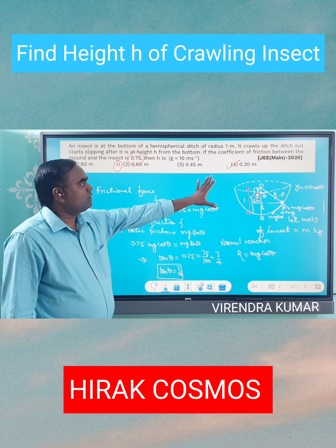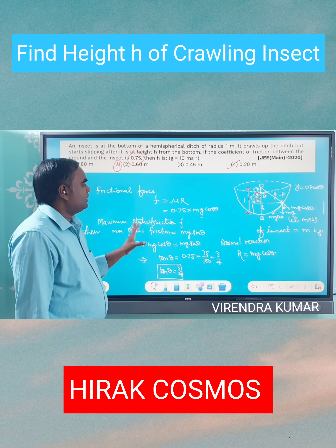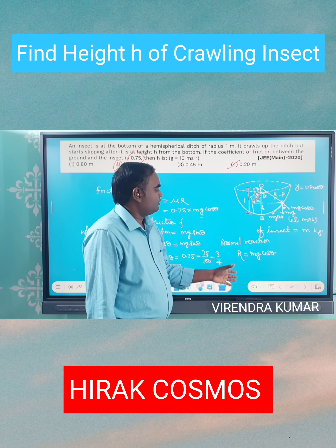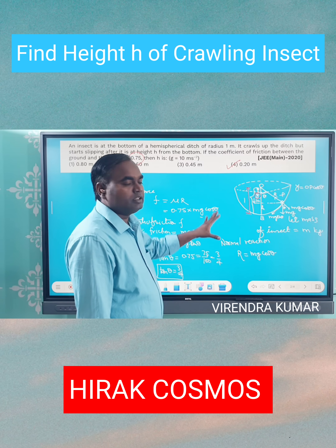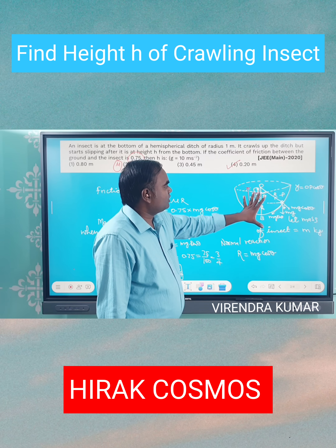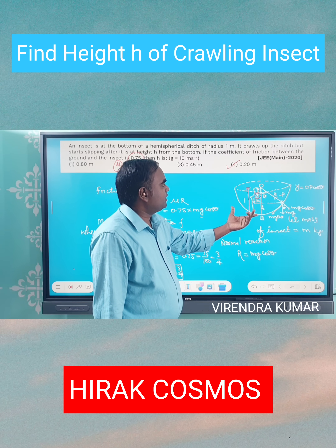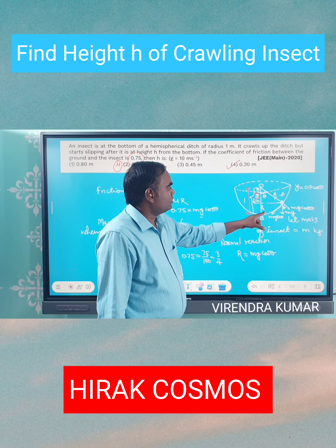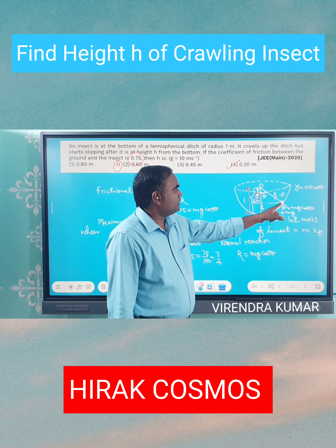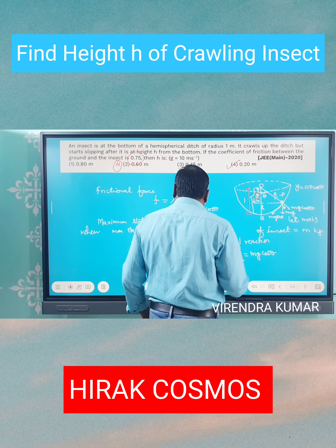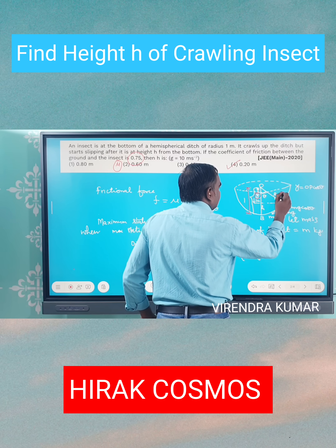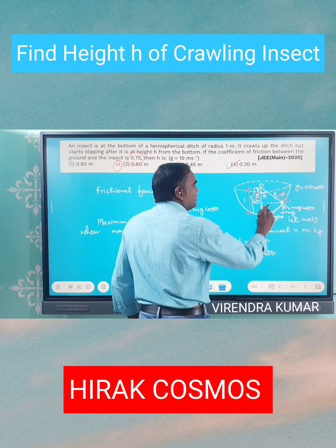The answer is 0.2 meter. To proceed with the solution, draw the figure for this hemispherical ditch. Suppose the insect reaches point P — this is the point P on the diagram.